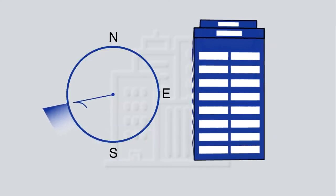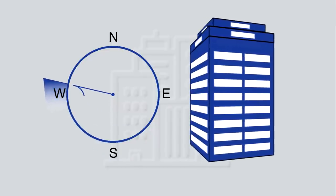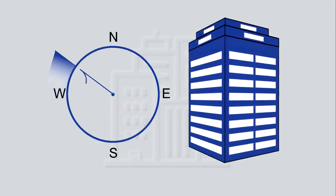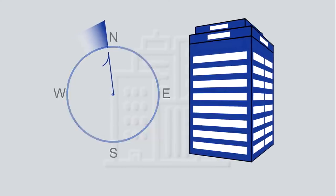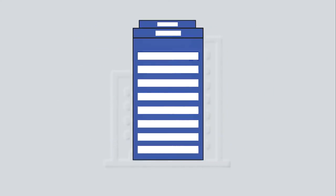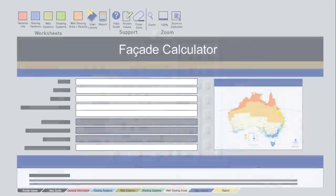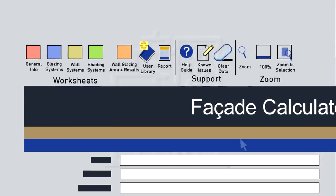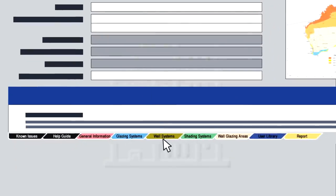Even if one aspect does not meet the minimum requirements, the facade can comply as a whole. The facade calculator, which is an Excel-based tool, helps you with all these calculations. Use the navigation ribbon at the top of the page or the tabs at the bottom to move around the calculator.